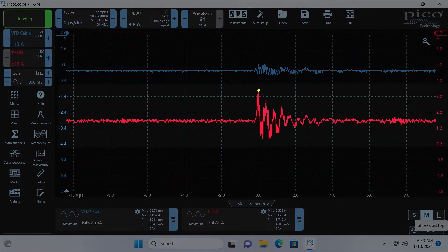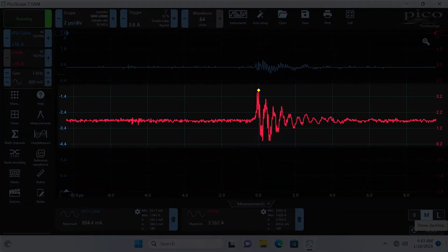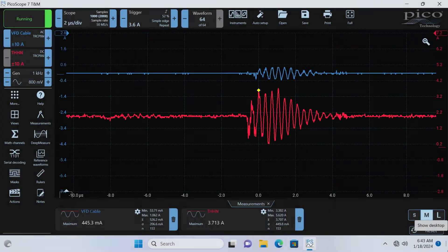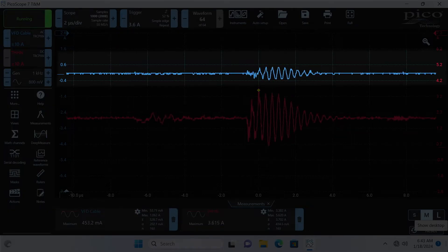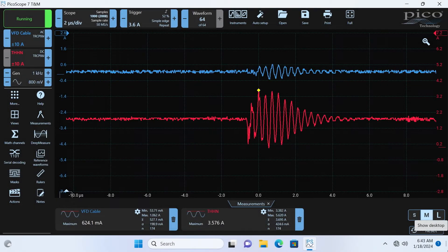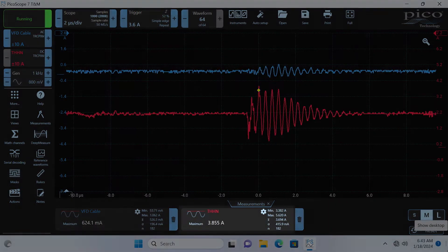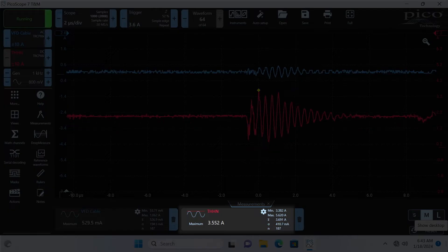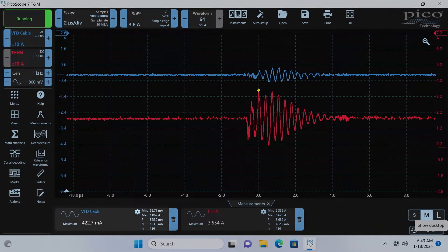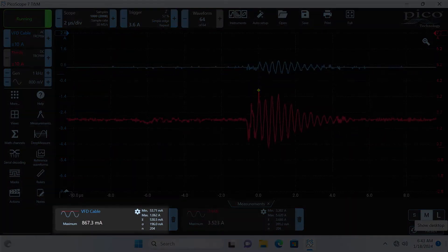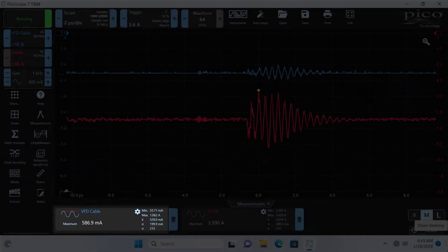As we look at the data, we can see that the red trace, which is the THHN motor shaft current, versus the blue trace, the VFD cabled motor shaft current. You can see that the THHN, we're looking at up to about 4 amps of current spikes on that motor shaft compared with consistently less than a single amp on the VFD cable.